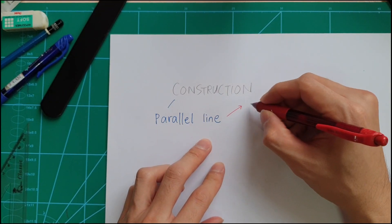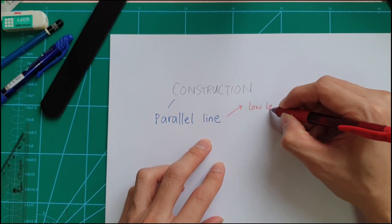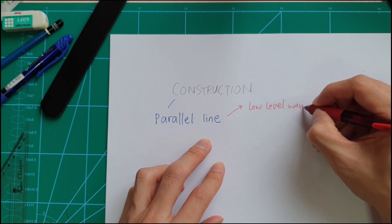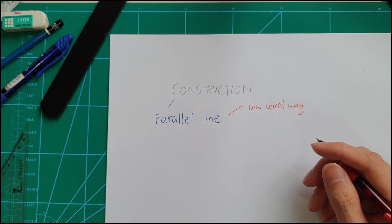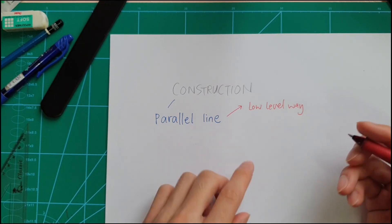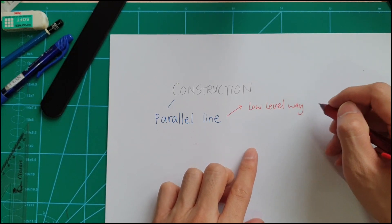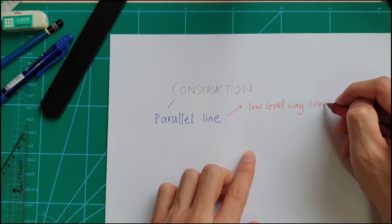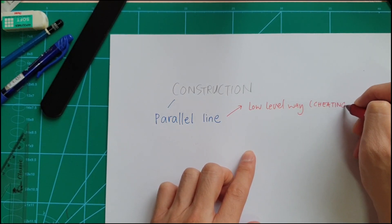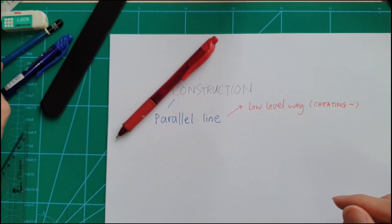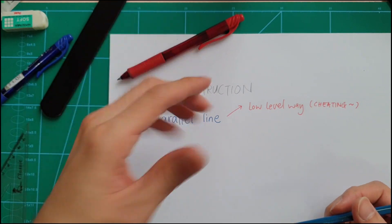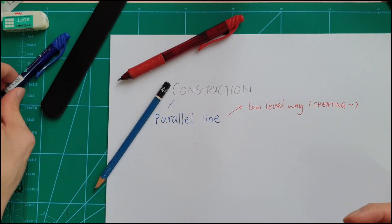Number one, I have the low-level way. Some students say, 'Teacher, my teacher taught me another way that's faster — can I use that?' So I will show that — it's sort of a cheating way, not the textbook way. If your teacher allows it, you can use it because it's fast.